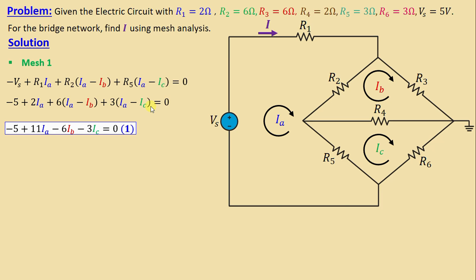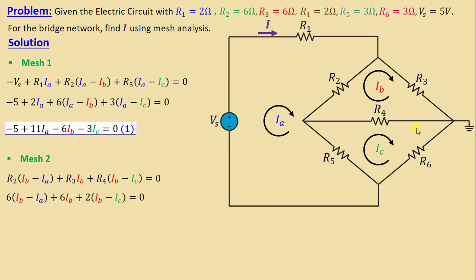After finishing mesh 1, we go now to mesh 2. By applying Kirchhoff's voltage law in mesh 2 we can write: R2·(Ib minus Ia) plus R3·Ib plus R4·(Ib minus Ic) equals zero. Replacing the resistors with their numerical values: 6·(Ib minus Ia) plus 6·Ib plus 2·(Ib minus Ic) equals zero. Simplifying, we obtain: negative 6·Ia plus 14·Ib minus 2·Ic equals zero.